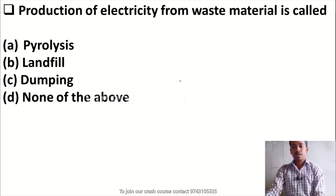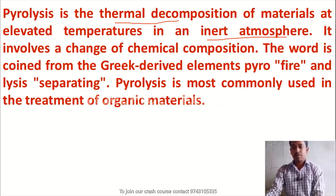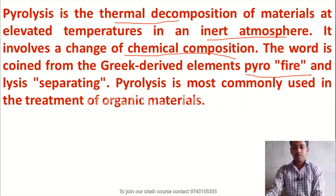Production of electricity from waste material is called: Option A, pyrolysis; Option B, landfill; Option C, dumping; Option D, none of the above. The right answer is Option A — pyrolysis. Pyrolysis is the thermal decomposition of materials at elevated temperature in an inert atmosphere and it involves chemical composition. The word pyrolysis is derived from Greek words: pyro means fire, and lysis means separating.